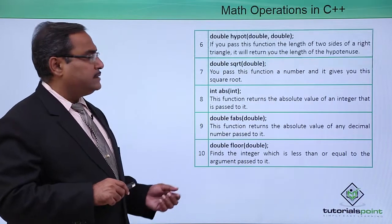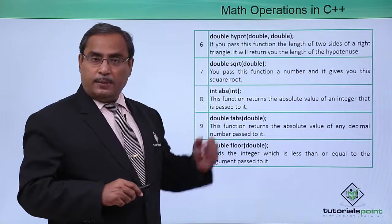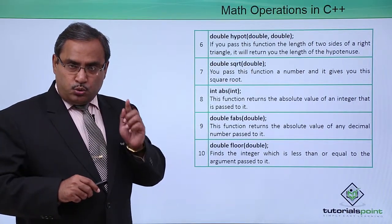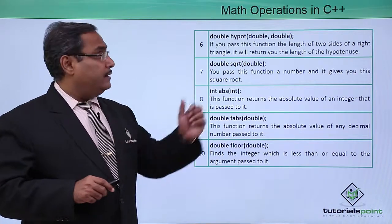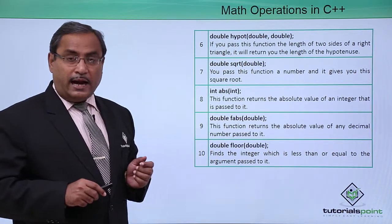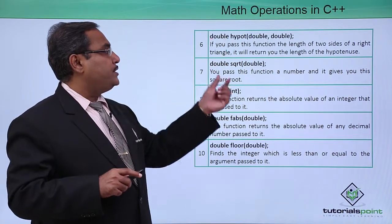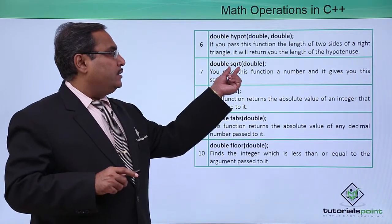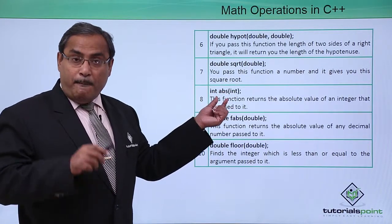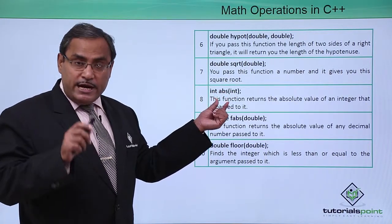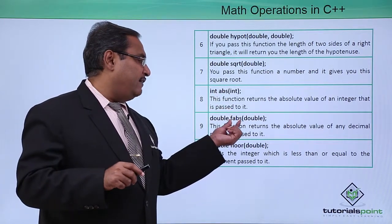There are some other functions as well. double hypot(double, double) — if you pass two sides of a right-angle triangle, hypot will calculate the hypotenuse of that triangle. sqrt calculates the square root, and abs calculates the magnitude of a number ignoring the sign — that is, the absolute value. There is also fabs.